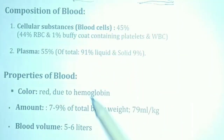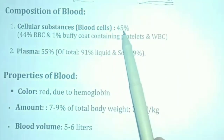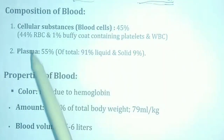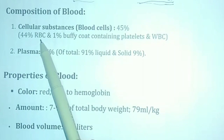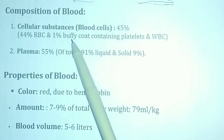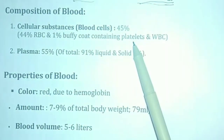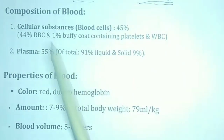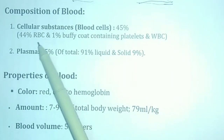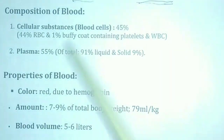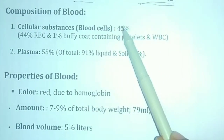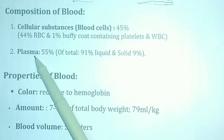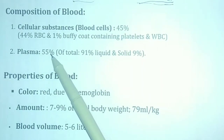Cellular Substances are called Blood Cells. 45% Cellular Substances are present in blood. Of that, 44% is RBC, and 1% is the Buffy Coat, containing Platelets and WBC. The remaining 55% is plasma.